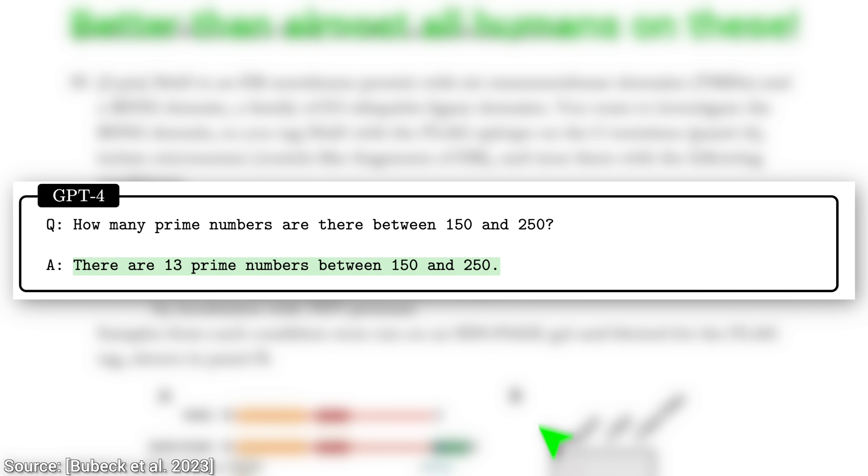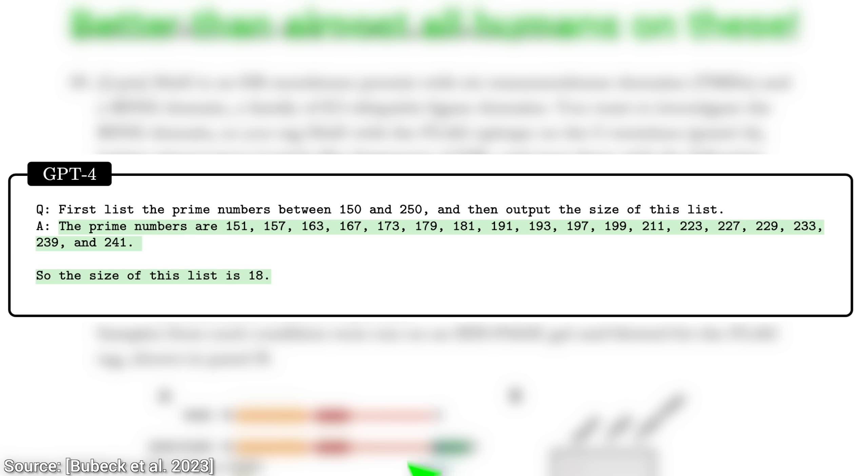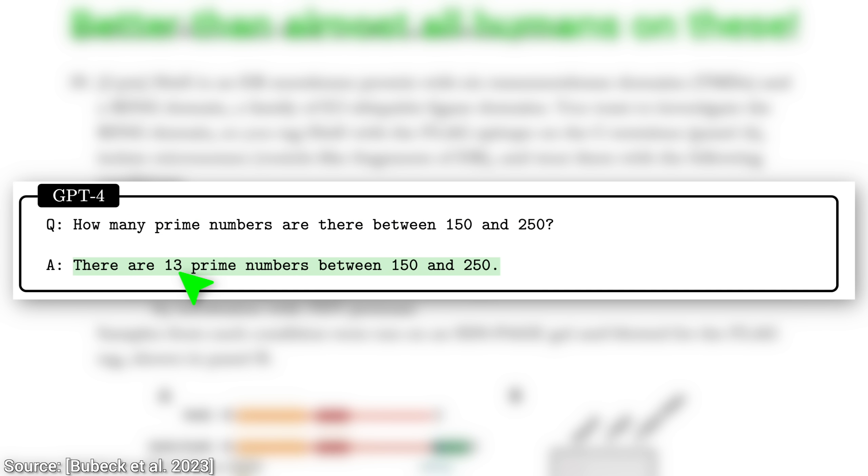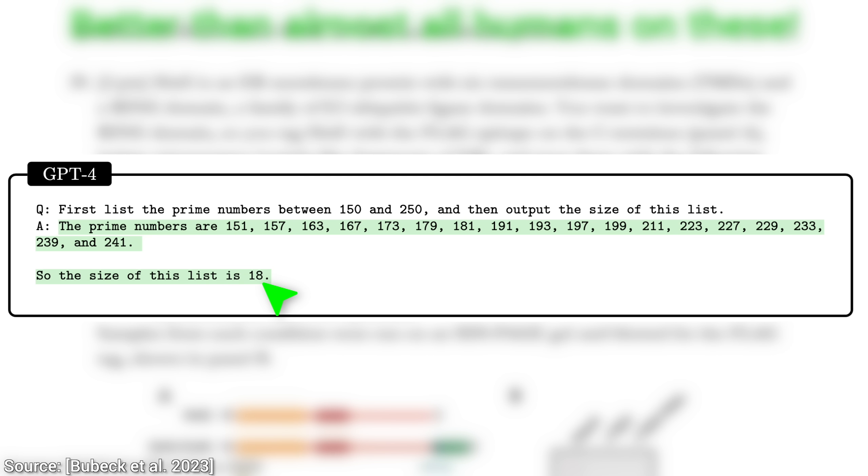First, when we ask how many prime numbers are there between 150 and 250, it says 13. Without commenting on this, instead, let's rephrase the question. Now, the AI lists the prime numbers between 150 and 250, then counts them up. Then it starts listing 15 and 18. So which one is it, 13 or 18? Well, the correct answer is indeed 18. But this is insanity.